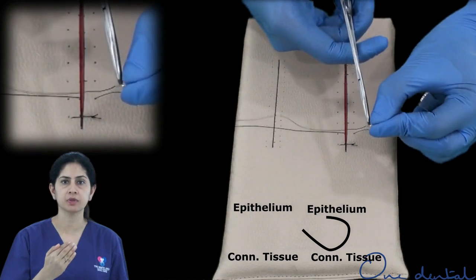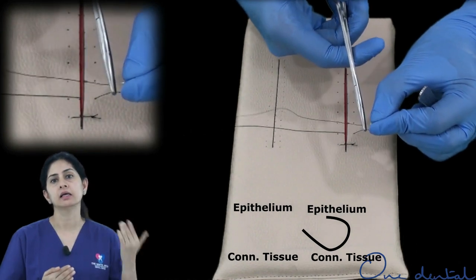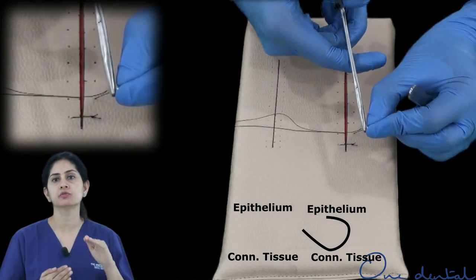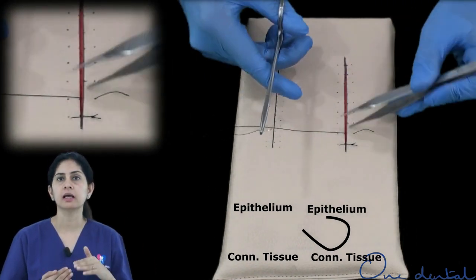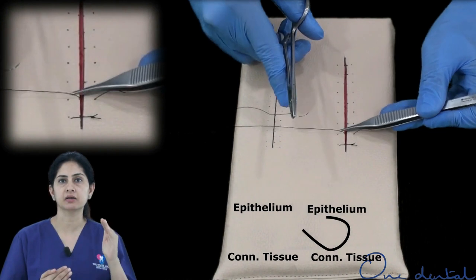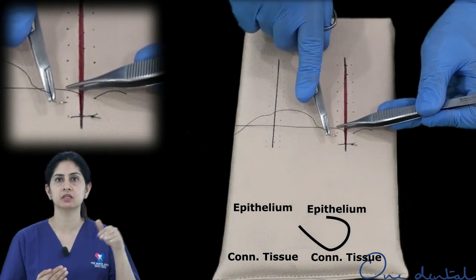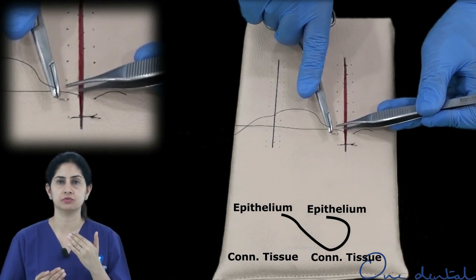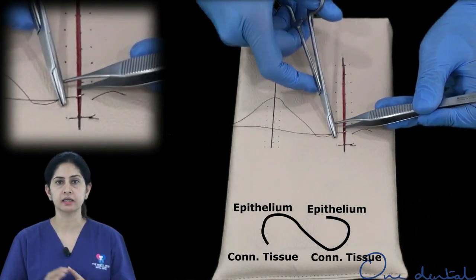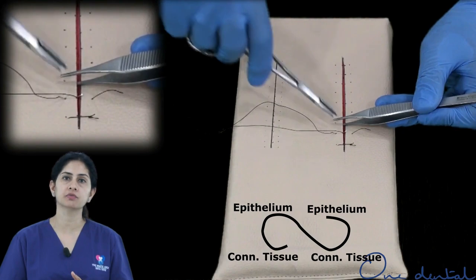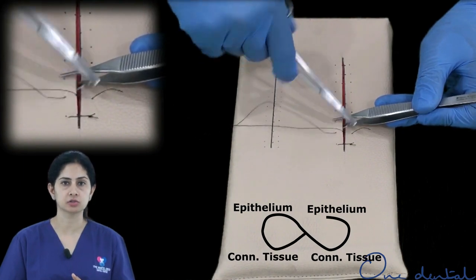It goes interdentally, and in that case you have to change the direction of the needle and bring it back from the epithelium to the connective tissue onto the buccal side, and then you give the modified surgeon's knot.